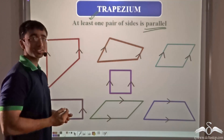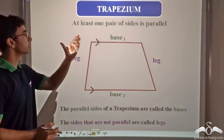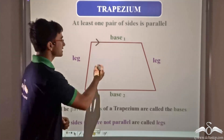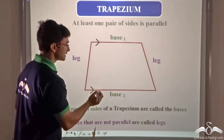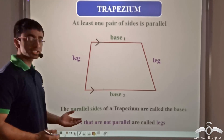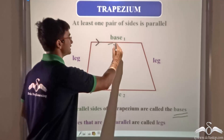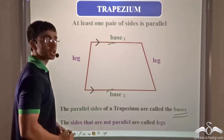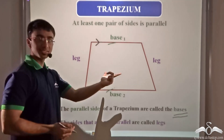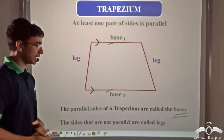The defining characteristic of a trapezium is that at least one pair of sides is parallel. The parallel sides of a trapezium are known as the bases, while the other two non-parallel sides are known as legs.